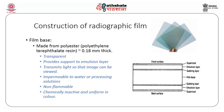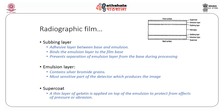Here we see the cross section of a film. The film has a subbing layer, emulsion layer, and a supercoat present on top of the film base. The subbing layer is an adhesive layer between the base and the emulsion — it binds the emulsion layer to the film base and prevents separation during processing. The emulsion layer is very important as it is the active part containing the silver bromide crystal, which is the most sensitive part of the detector that produces the image. The supercoat is a thin layer of gelatin applied on top of the emulsion to protect from effects such as pressure or abrasion.